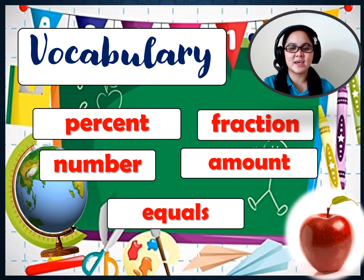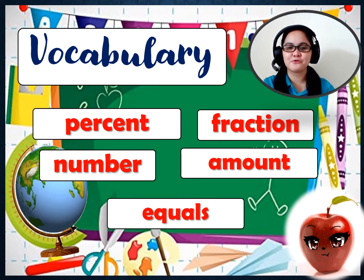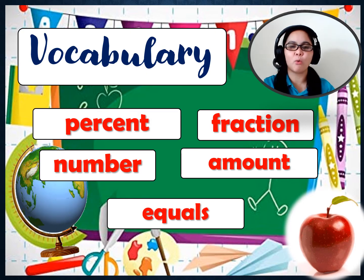Let's spell the words. Percent: P-E-R-C-E-N-T. Number: N-U-M-B-E-R. Fraction: F-R-A-C-T-I-O-N. Amount: A-M-O-U-N-T. And last, equals: E-Q-U-A-L-S.